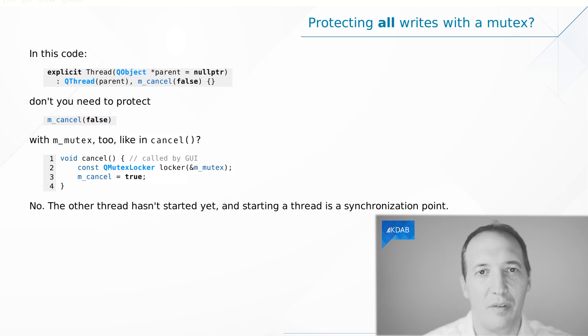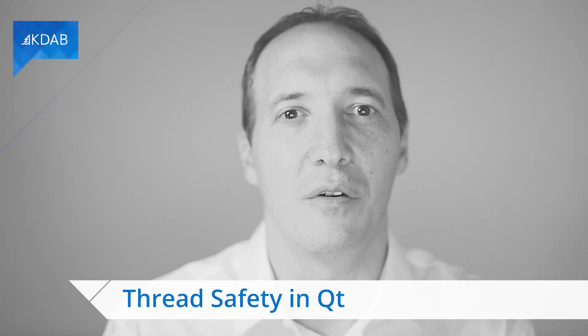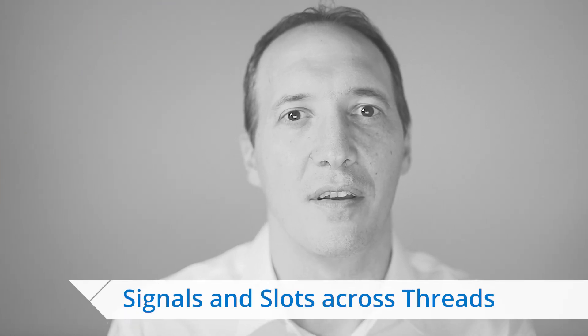So with all this in mind, be very careful with accessing the same memory region from two different threads. Do use mutexes. Do not think that small types are atomic enough for this to work. This is not the case. That is it about synchronization. In the next video, we will talk about thread safety and Qt signals and slots. Thank you for watching.